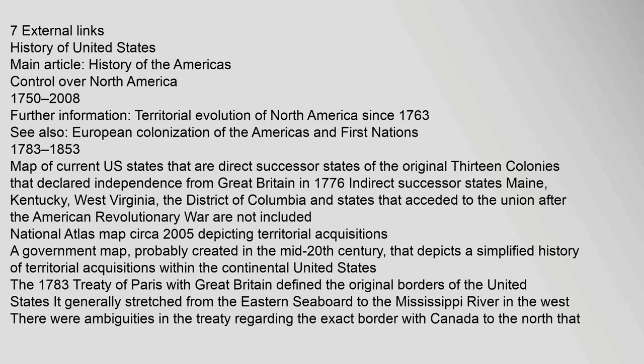1783–1853. Map of current U.S. states that are direct successor states of the original thirteen colonies that declared independence from Great Britain in 1776. Indirect successor states — Maine, Kentucky, West Virginia, the District of Columbia — and states that acceded to the Union after the American Revolutionary War are not included. National Atlas map circa 2005 depicts territorial acquisitions, probably created in the mid-twentieth century.